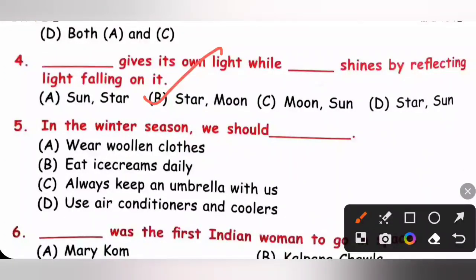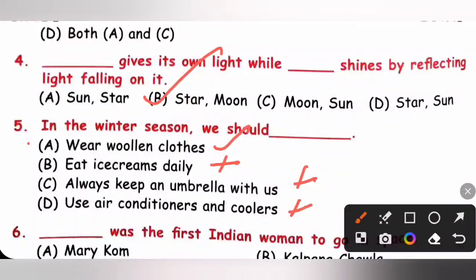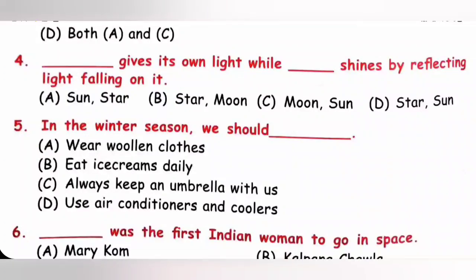Question 5: In the winter season we should — wear woolen clothes: yes; eat ice cream daily: no; always keep an umbrella: no; use air conditioner to cool us: no. So in the winter season we should wear woolen clothes to keep us warm. Option A is the correct answer.